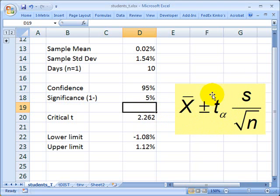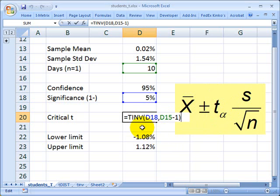This critical T is a function of my significance. And I can use the Excel function equals T inv. It only takes two parameters. The significance level here, which is my probability. In this case, it's 5% or 1 minus my confidence. And then here I've got my degrees of freedom, which are the number of observations, 10 days minus 1. So I get a critical T of 2.262.